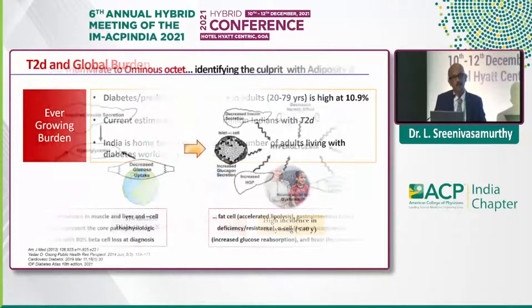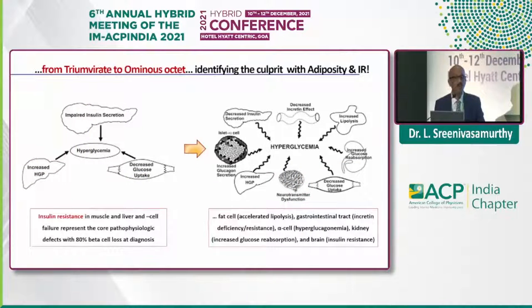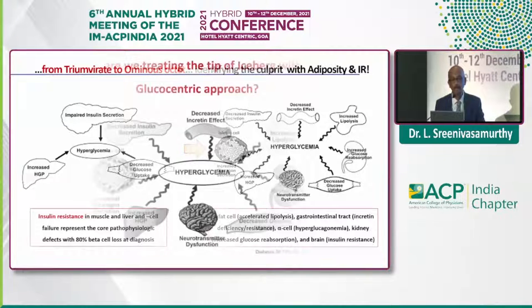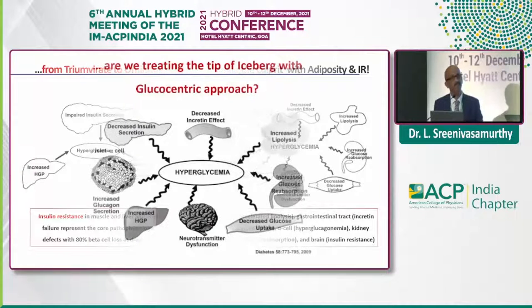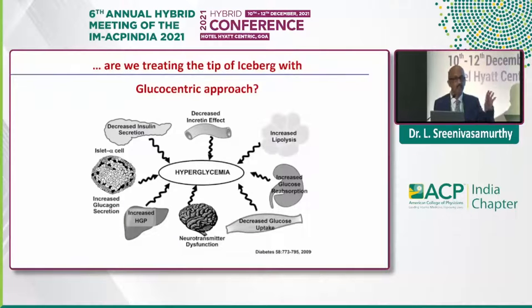When it comes to pathogenesis, from the ominous octet and beyond, we are involving whatever available systems in the pathogenesis of hyperglycemia. There has been the glucocentric approach, and the fallacies of this have been shown in the UKPDS and VADT trials — targeting only the HbA1C below 7% is not going to help you or prevent macrovascular complications.